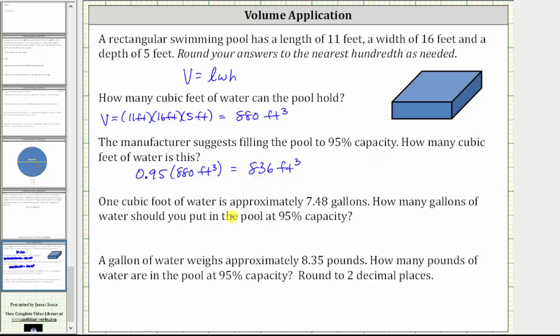Next, one cubic foot of water is approximately 7.48 gallons. How many gallons of water should you put in the pool at 95% capacity? To answer this question, we need to figure out how many gallons there are in 836 cubic feet, because this is the amount of water in the pool at 95% capacity.